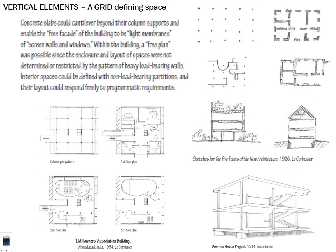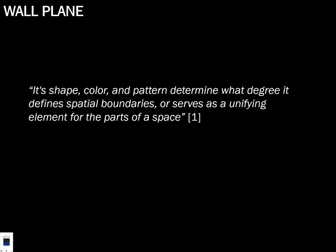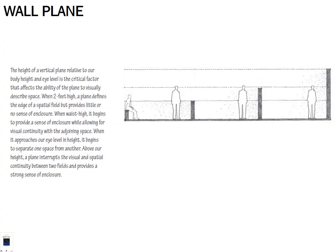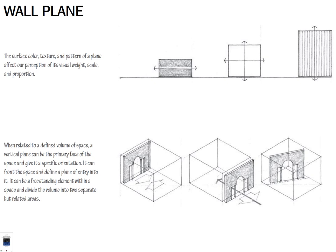The shape, color, and pattern of the wall determine how much it serves as a separation or unifying element between two spaces. The height of the wall affects whether it can be used as seating, whether you can see over it, how it affects connectivity, or how much enclosure it creates. The color, texture, and pattern of the plane also affect your perception of visual weight, scale, and proportion. Where the wall is positioned with respect to volumes of space affects whether it connects or separates the two sides.